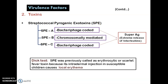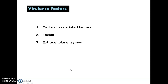Another important thing to note is the Dick test. The Dick test is done to test if anyone is susceptible to streptococcal infection. SPE was previously called erythrogenic or scarlet fever toxin, because its intradermal injection in susceptible children causes local erythema. Because of this local erythema, it was previously known as erythrogenic or scarlet fever toxin.